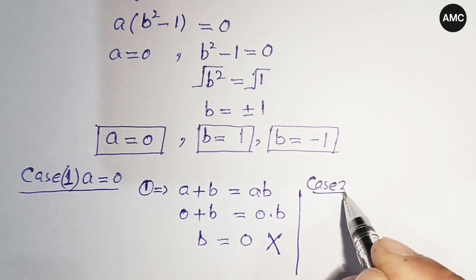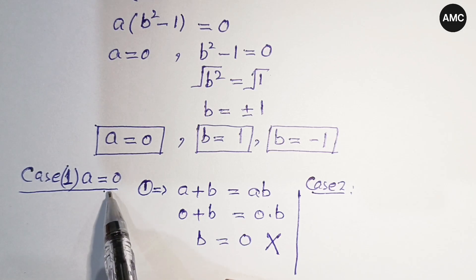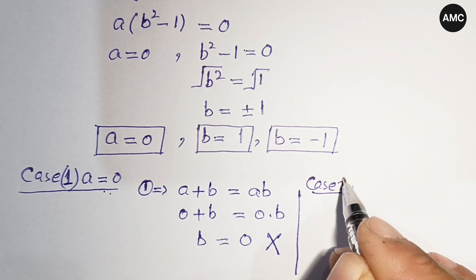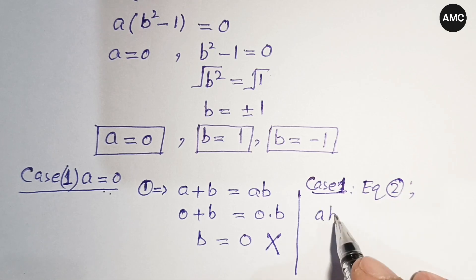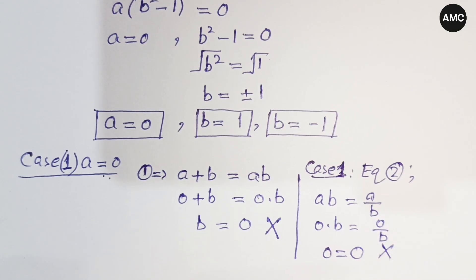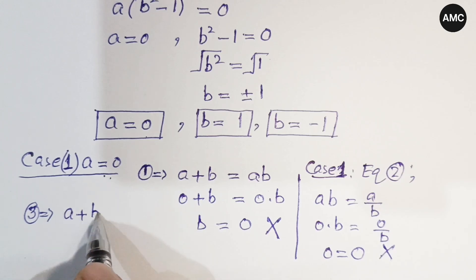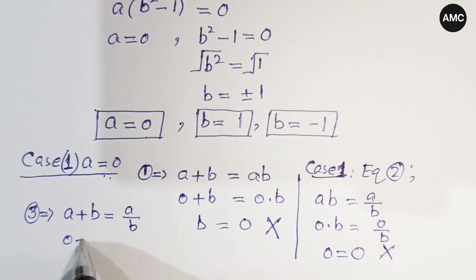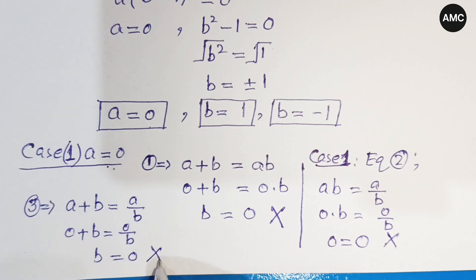Still with a equals zero, checking equation two: zero times b equals zero over b, giving zero equals zero — no unique solution. Checking equation three: zero plus b equals zero over b gives b equals zero again, which is not possible. So a equals zero gives no valid solution.